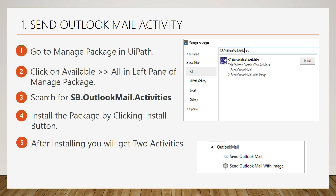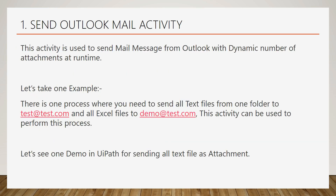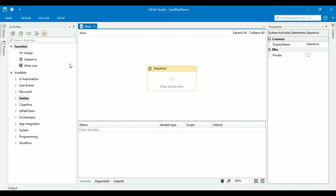Send Outlook Mail Activity is used to send a mail message from Outlook with a dynamic number of attachments at runtime. Let's see a demo in UiPath. Here I will create a workflow to send all text files in a mail attachment.